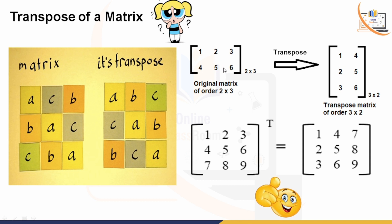From the original matrix of order two cross three, after making the transpose we get the reverse order three cross two. For a square matrix like 1, 2, 3 / 4, 5, 6 / 7, 8, 9 of order three cross three, after transpose the order remains three cross three — only the rows become columns and columns become rows. That is the basic concept of transpose of a matrix, and we will use this idea in other properties of matrices.